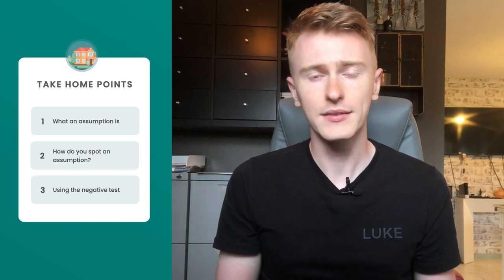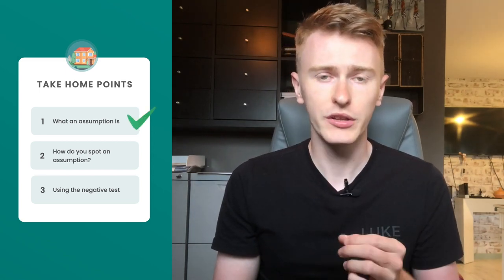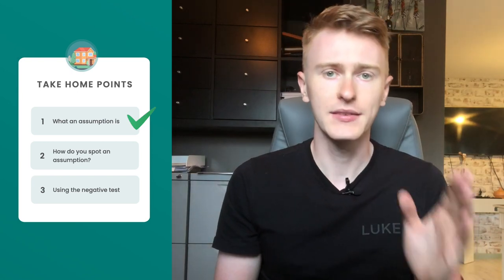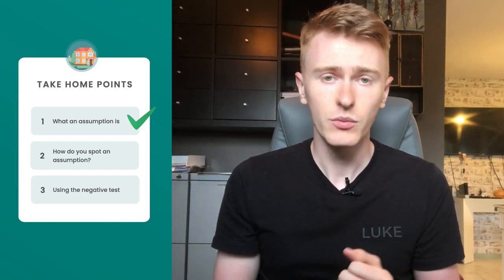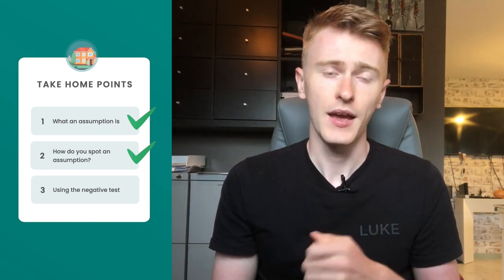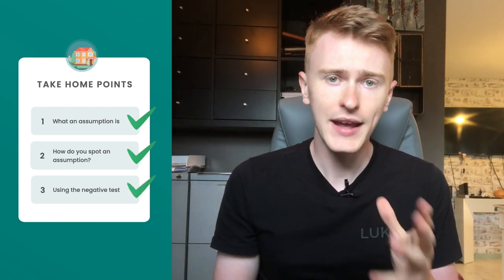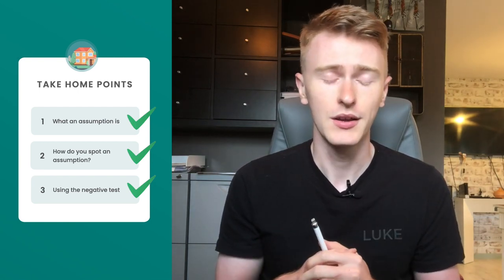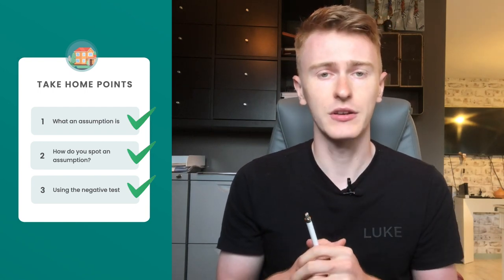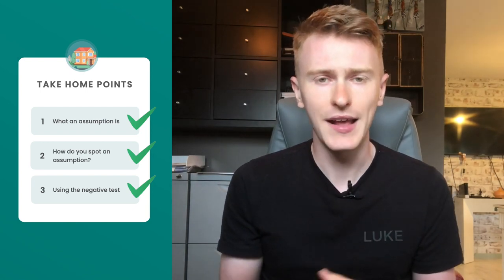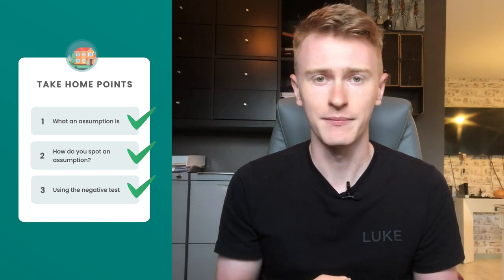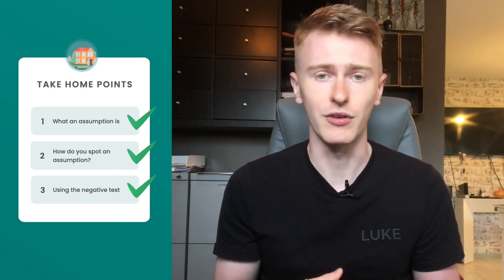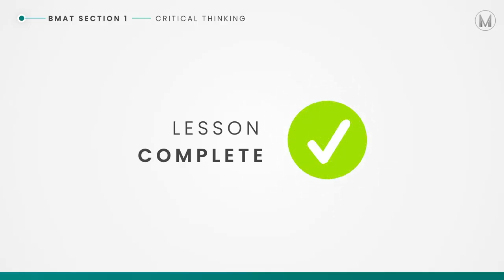Take-home points: we recognised what an assumption is — the unstated link between the premise and the conclusion. Second, we went through how to spot an assumption. Third, we used the negative test to narrow down between answer options we think could be the assumption — achieved by flipping the answer option into its negative counterpart and seeing whether that damages the argument. If it damages the argument, then that answer option is the assumption. And that's the lesson complete. I hope that was helpful. My name's George and I look forward to seeing you again soon.